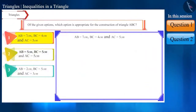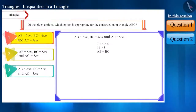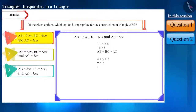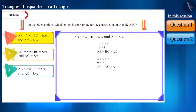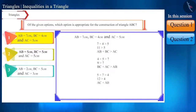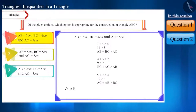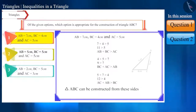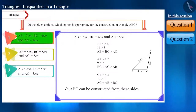Let's take the first option. The sum of side AB and side BC is greater than side AC. Similarly, the sum of side BC and side AC is greater than side AB, and the sum of side AC and side AB is greater than side BC. Therefore, triangle ABC can be constructed from these sides, so this option is correct.